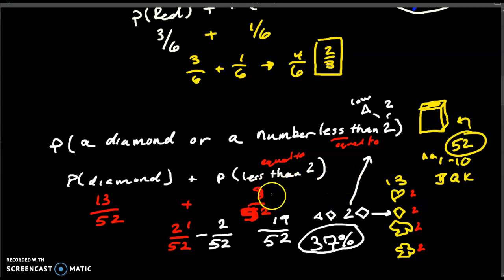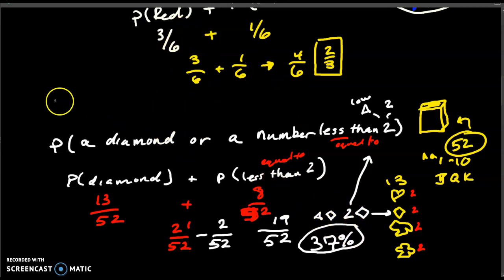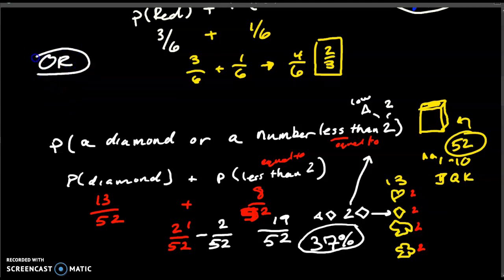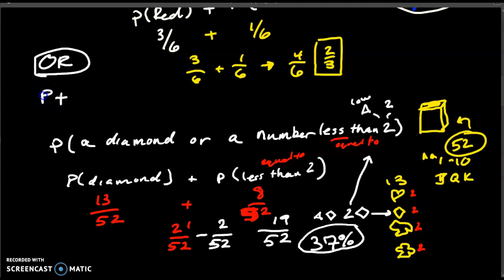So 19 out of 52 would be the odds of getting a number less than or equal to two or a diamond — about a 37% chance. Hopefully that helps you out. Remember the essential concept: if the word 'OR' is in there, you should use a plus sign for the probabilities — the probability of A plus the probability of B. Thanks, have a nice day.